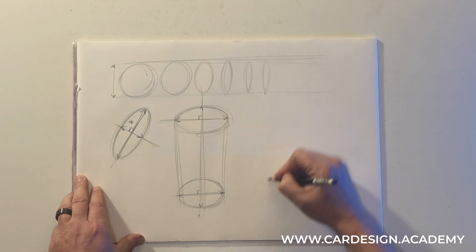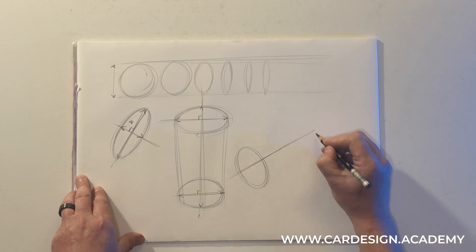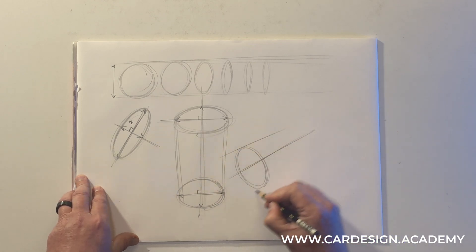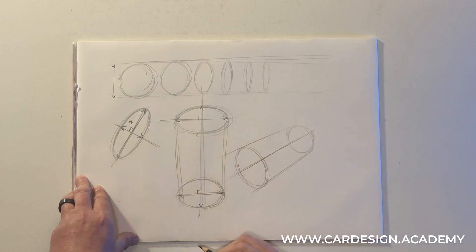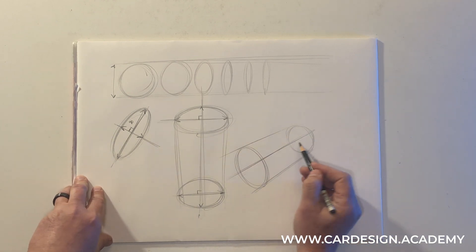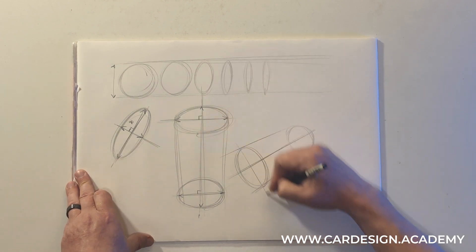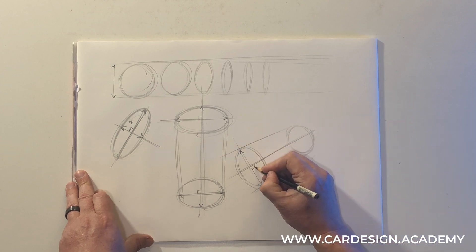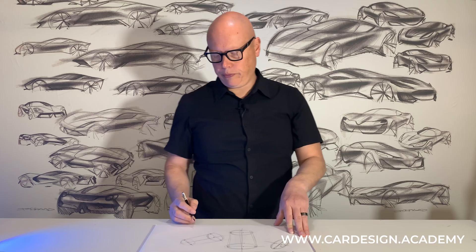No matter which position we sketch these ellipses, if I draw a cylinder going this way, you can see that far side cylinder is slightly more open but also slightly smaller. But no matter which way I draw that cylinder, the major axis and the minor axis are going to be 90 degrees from each other.